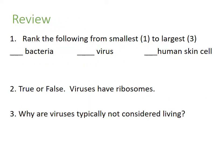Let's rank the following from smallest to largest: a bacterium, a virus, and a human skin cell. The virus is the smallest, then bacteria, then a human skin cell. So virus is one, bacteria two, and human skin cell three.